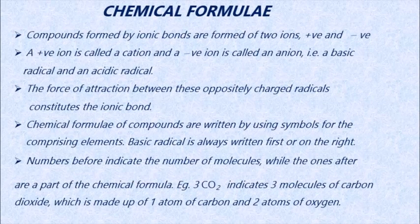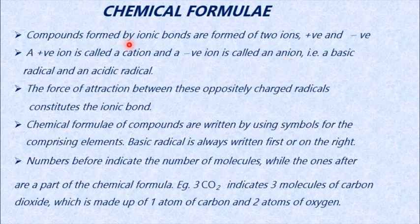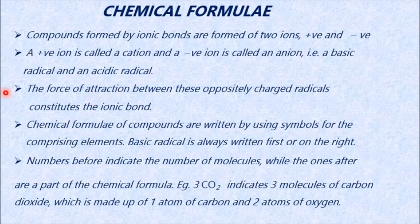Next is chemical formulae. Chemical formulae are characteristics of compounds formed by ionic bonds. Compounds formed by ionic bonds have two ions — positive or negative. A positive ion is called a cation and a negative ion is called an anion. A positive ion is called a basic radical and a negative ion is called an acidic radical, because they take part independently in chemical reactions.